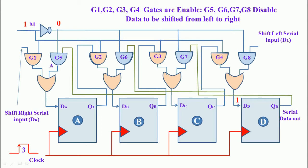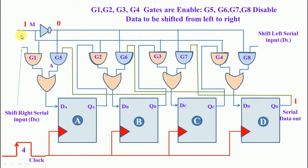After applying the fourth clock pulse, the DD input shifts out. This completes the shifting from left to right. Observing the result: when we select control signal value 1, the data is shifted from left to right.